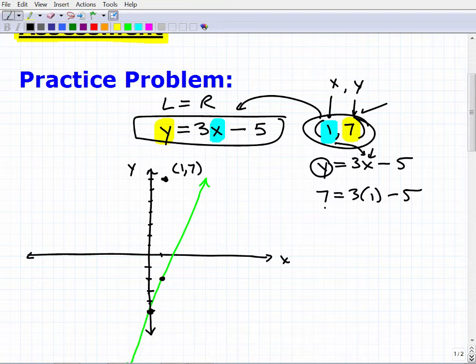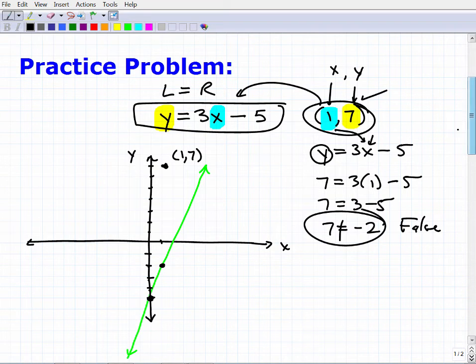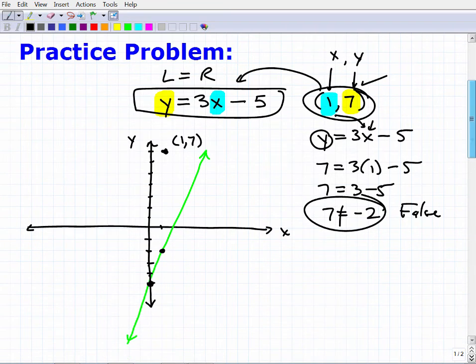Okay, so what do I get here? I get 7 equals 3 times 1 is 3, so 3 minus 5. Is that true? So 7 equals negative 2, well, no. That's false. This is a false statement. So because this is false, when I plugged in these values here, because it didn't balance the equation, then this does not lie on that line.